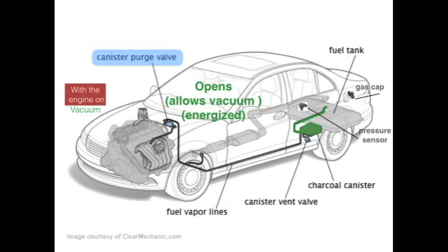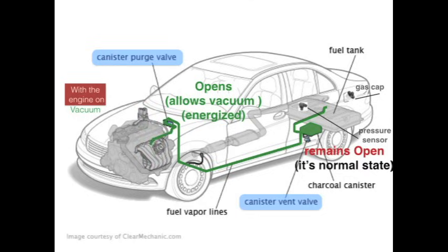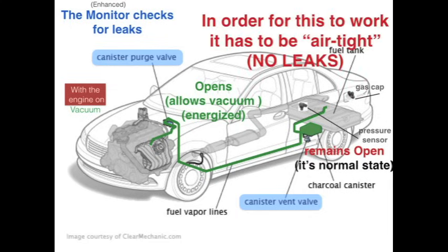When the EVAP system wants to draw vapors from the charcoal canister, it's going to open — or energize — the canister purge valve. That allows the vacuum from the engine to travel through the system. The canister vent valve stays open, and vapors can travel from the charcoal canister all the way up to the engine. The EVAP system has a way of checking to make sure it's working — it's called the enhanced monitor — and it checks for leaks. In order for this to work, there must be no leaks; it has to be airtight.